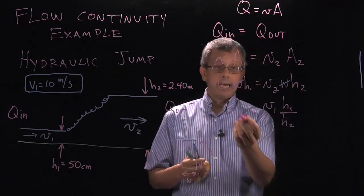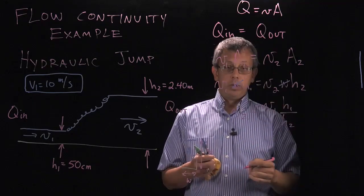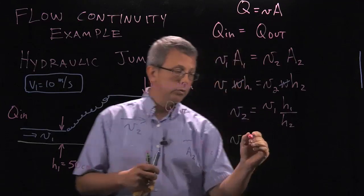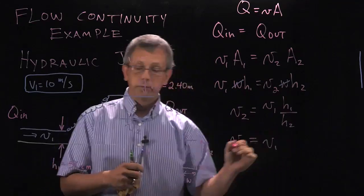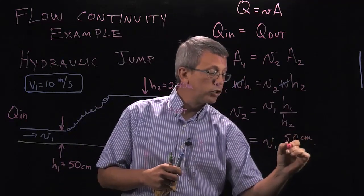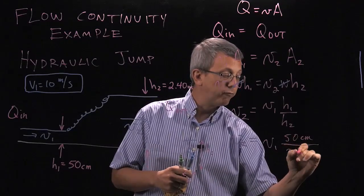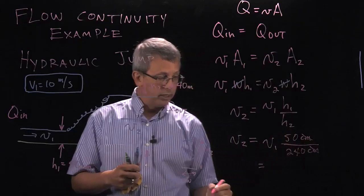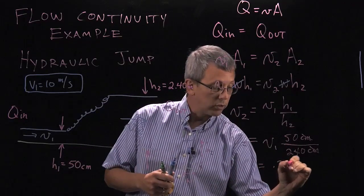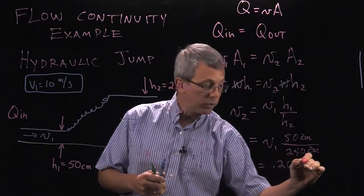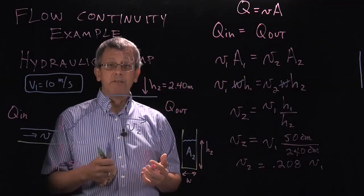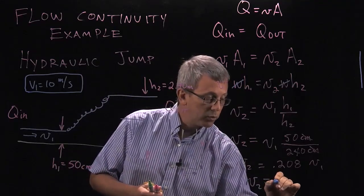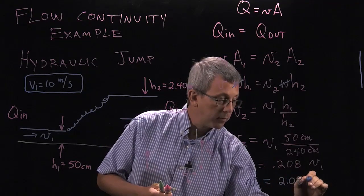In other words, the second velocity is equal to the first velocity times the ratio between those two heights. When I plug in the two heights, V2 is equal to V1, 50 centimeters over 2.4 meters, which I will convert to centimeters, 240 centimeters. And that's equal to, notice the centimeters cancels out, and that value is equal to 0.208. V2 is equal to 0.208 times V1. And if I recognize that V1 is 10 meters per second and plug that in, I get that V2 is equal to 2.08 meters per second.